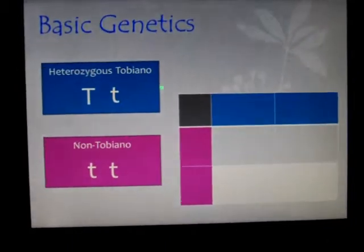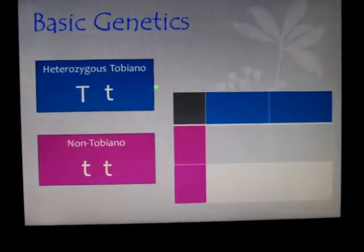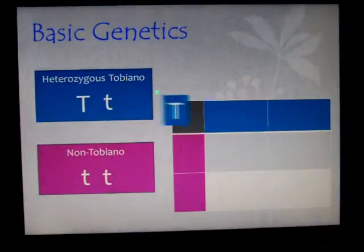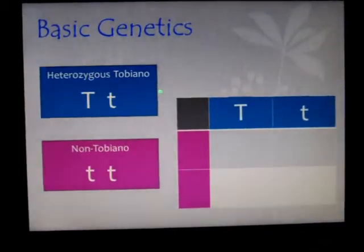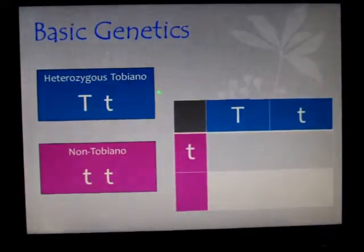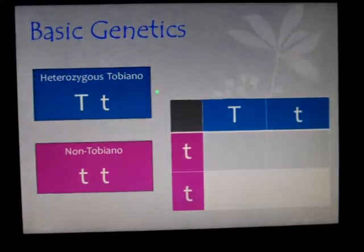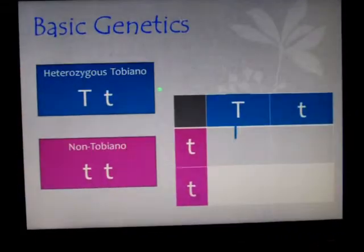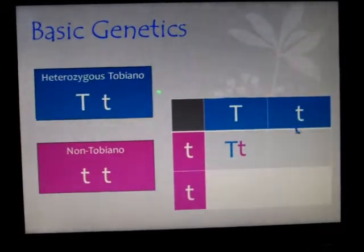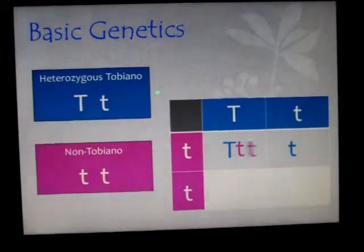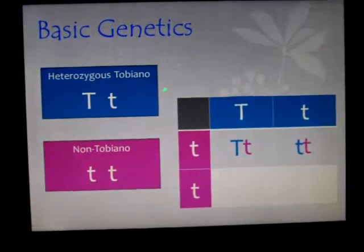Here's another example. It works the same way — we have a heterozygous tobiano, which is big T little t, and again a non-tobiano. You take the sire and plug his T's into the upper part and the dam goes on the lower part, and it works the same way. The T's drop in like that — little t, little t.